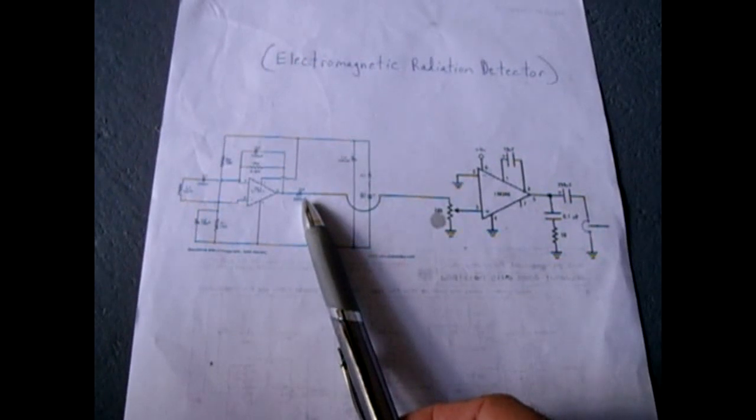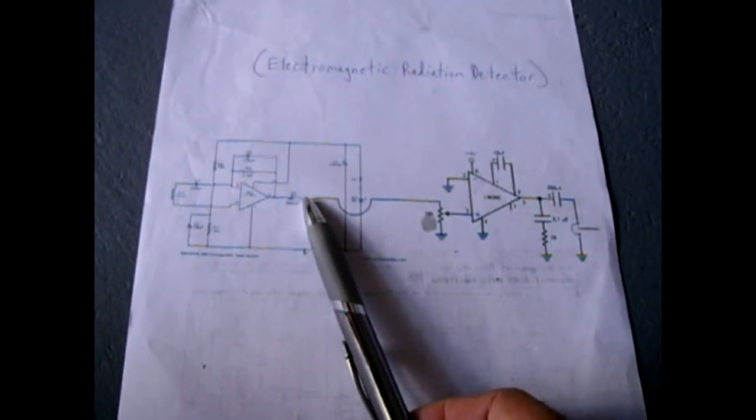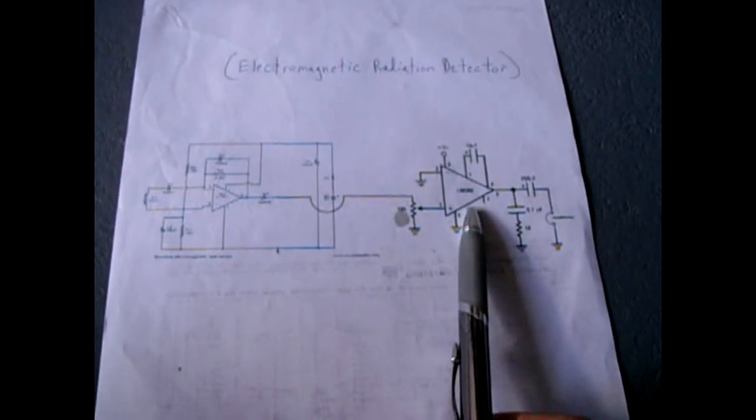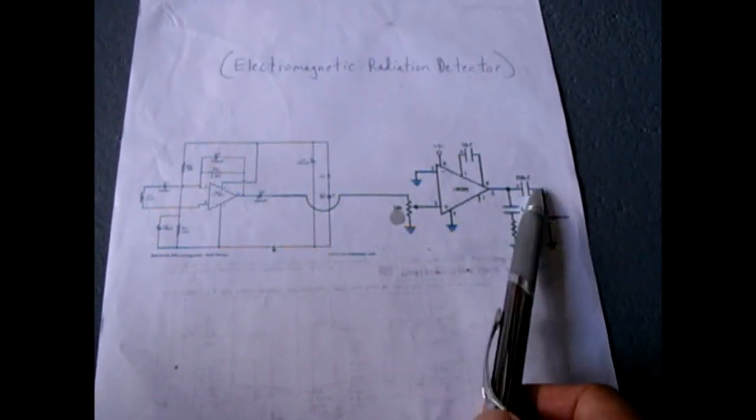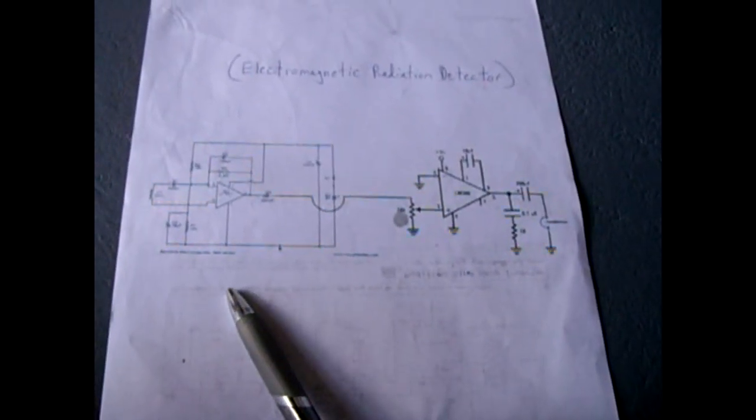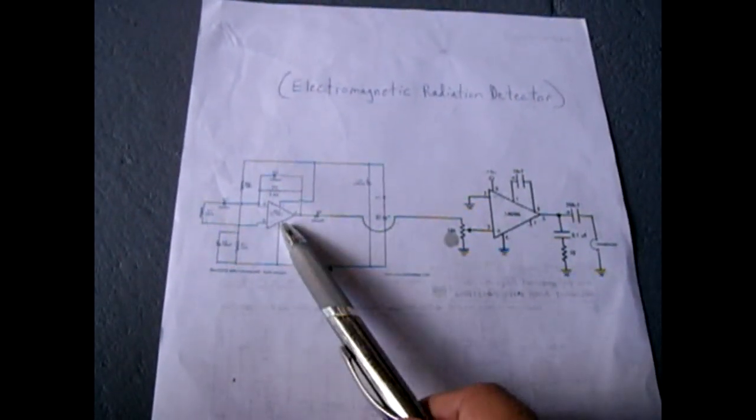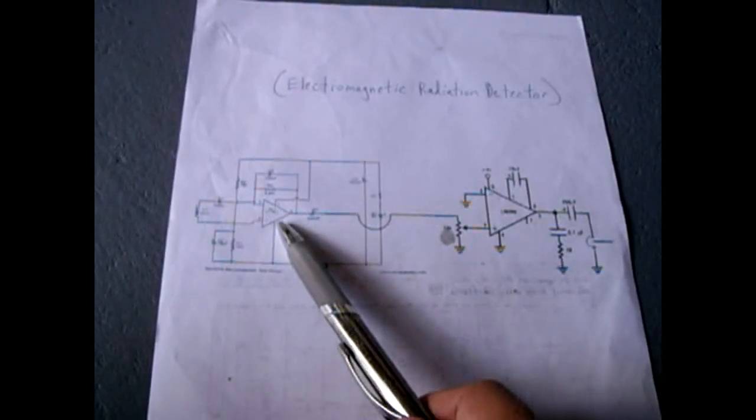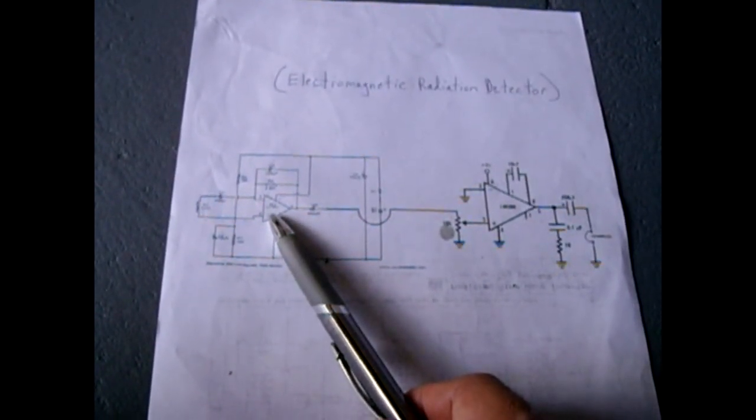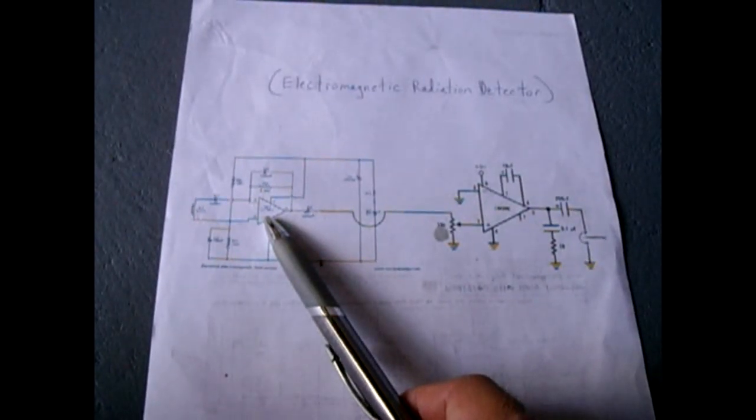I took the output that was going to the headphones and I fed that into an LM386 amplifying circuit which then goes into the headphones so you're getting a lot of amplification from this circuit. This circuit uses an operational amplifier. I didn't have the one the schematic called for so I use a TL072 which worked perfectly.